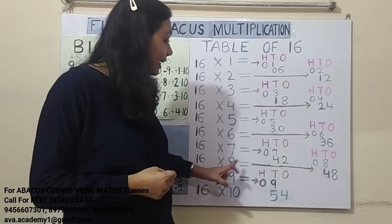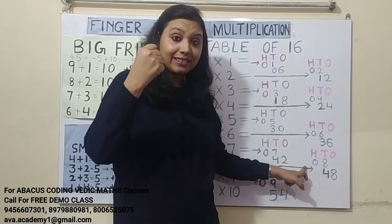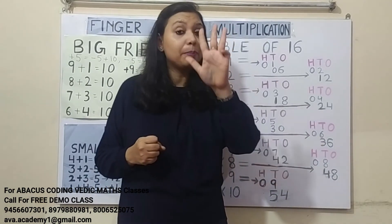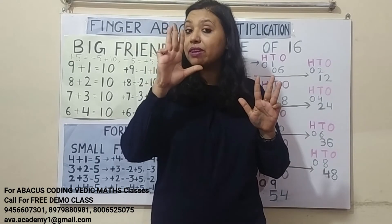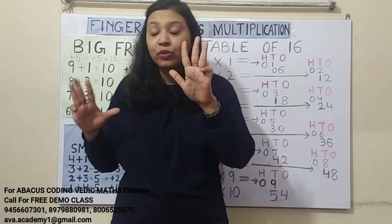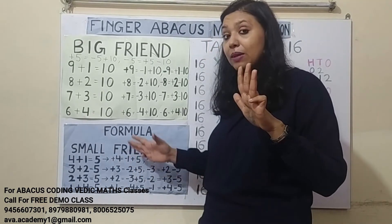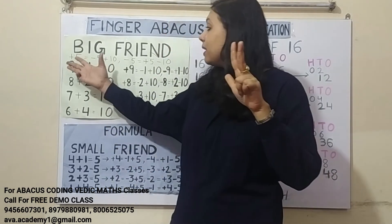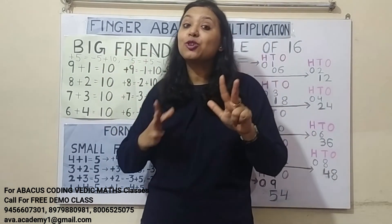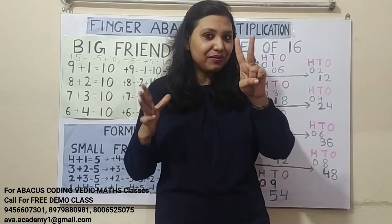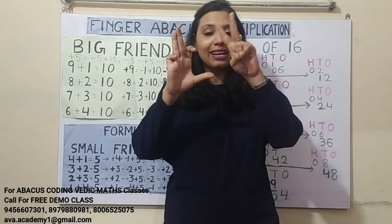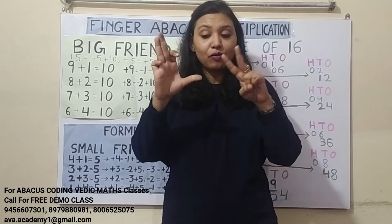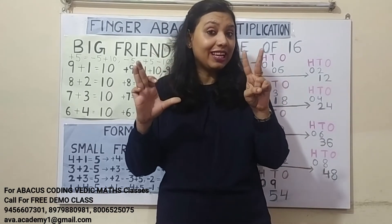16 eights are: 1 eights are 8 — in 100's we represent 0, in 10's we represent 8. 6 eights are 48 — in 10's we represent 40, and in 1's we represent 8. We can represent 8, but to add 40: plus 4's formula is minus 1 plus 5, so plus 40's formula is minus 10 plus 50. Again, 50 we cannot add, so plus 5's formula is minus 5 plus 10, meaning plus 50's formula is minus 50 plus 100. So the answer is 128: in 100's it's 1, in 10's it's 2, and in 1's it's 8.